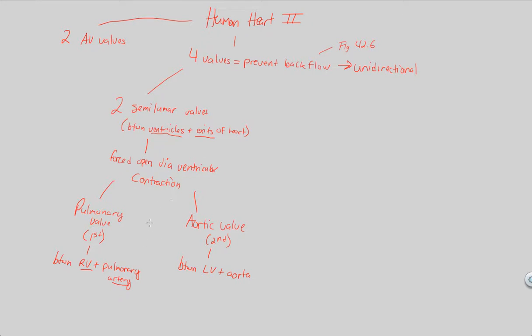Those are our semilunar valves. We have four total: two AV and two semilunar. Just remember that all the valves are there to ensure we have unidirectional flow of blood.